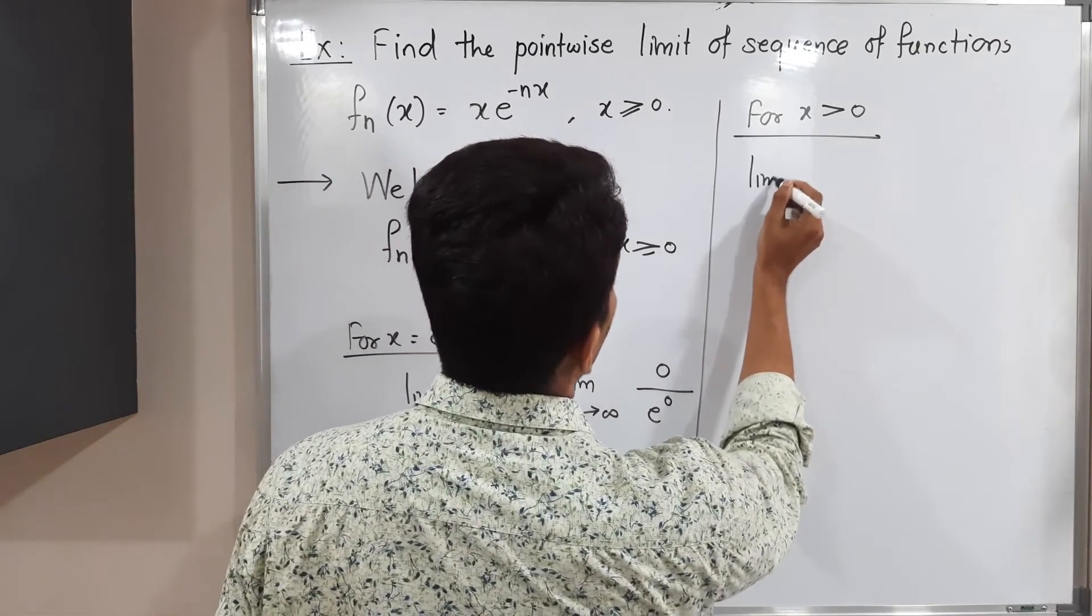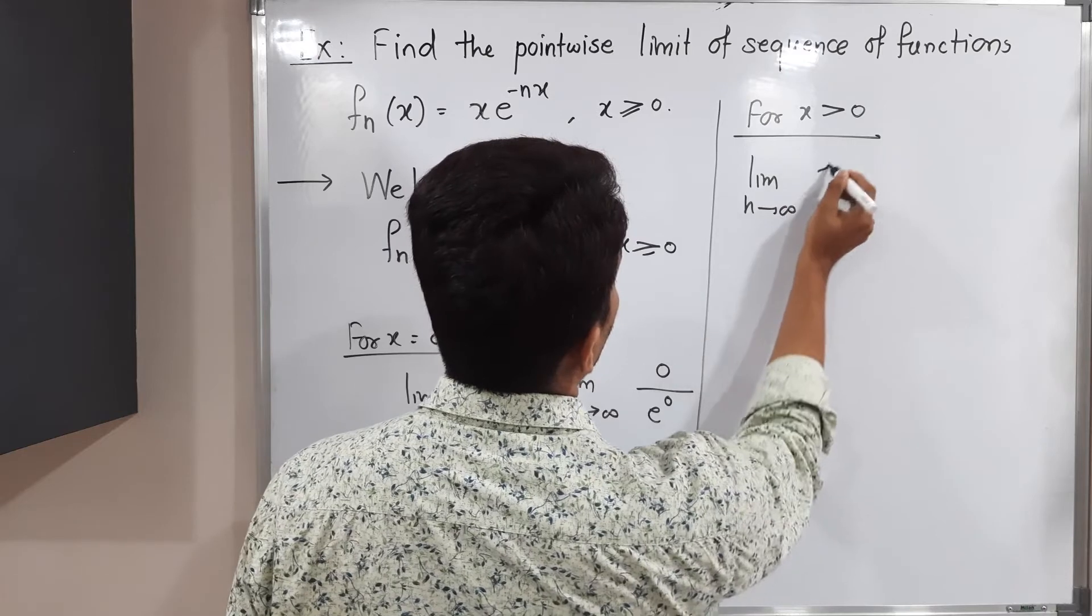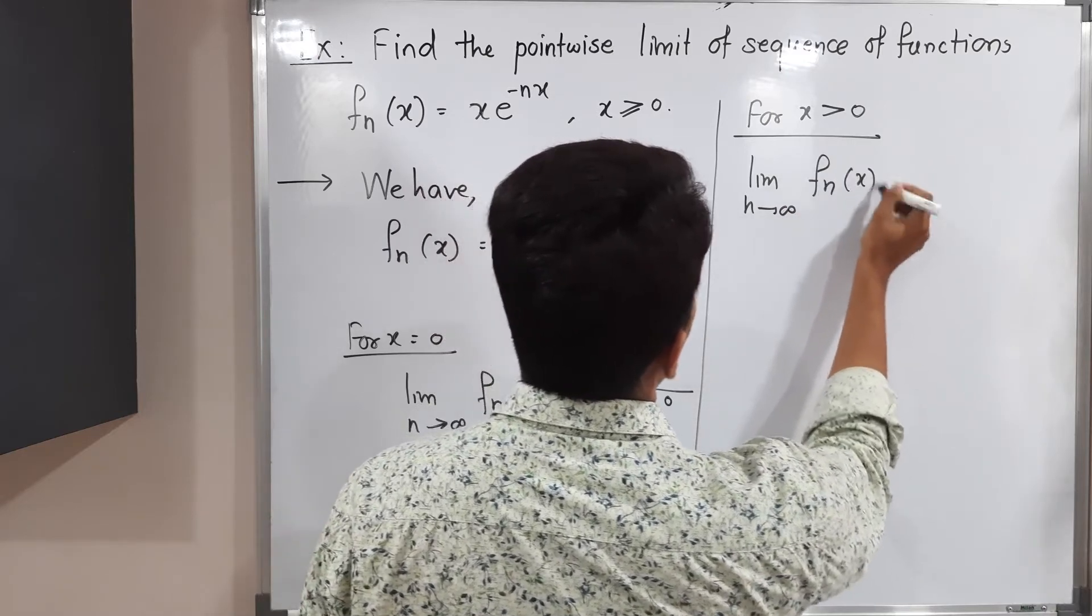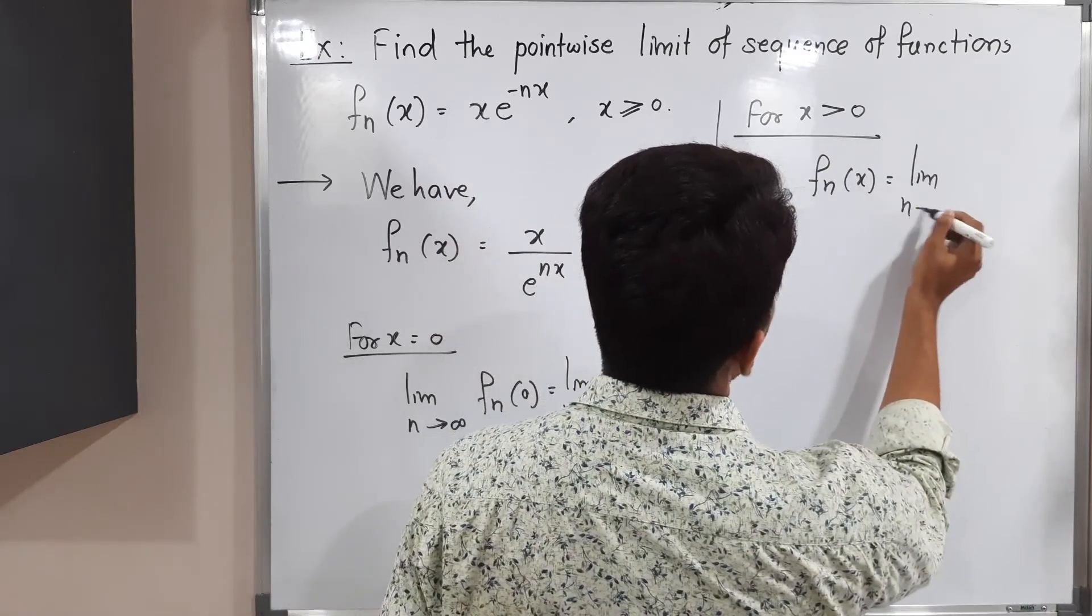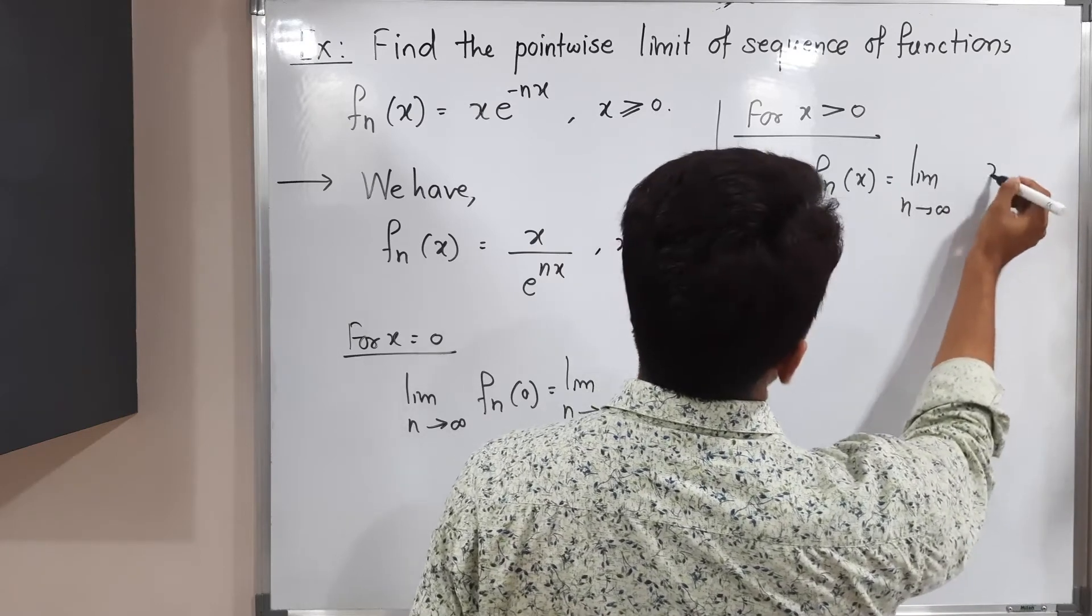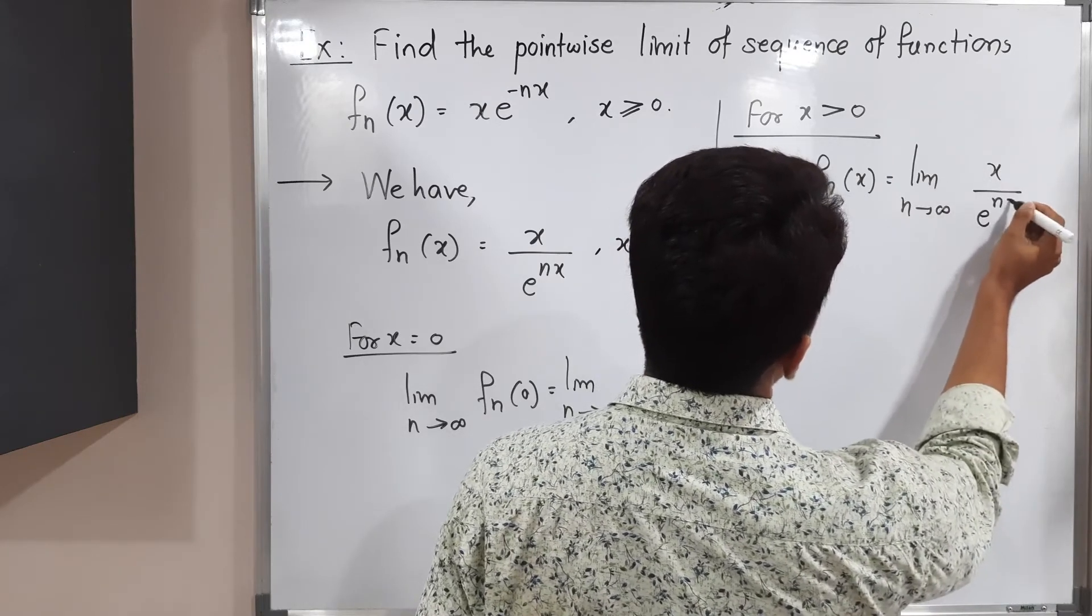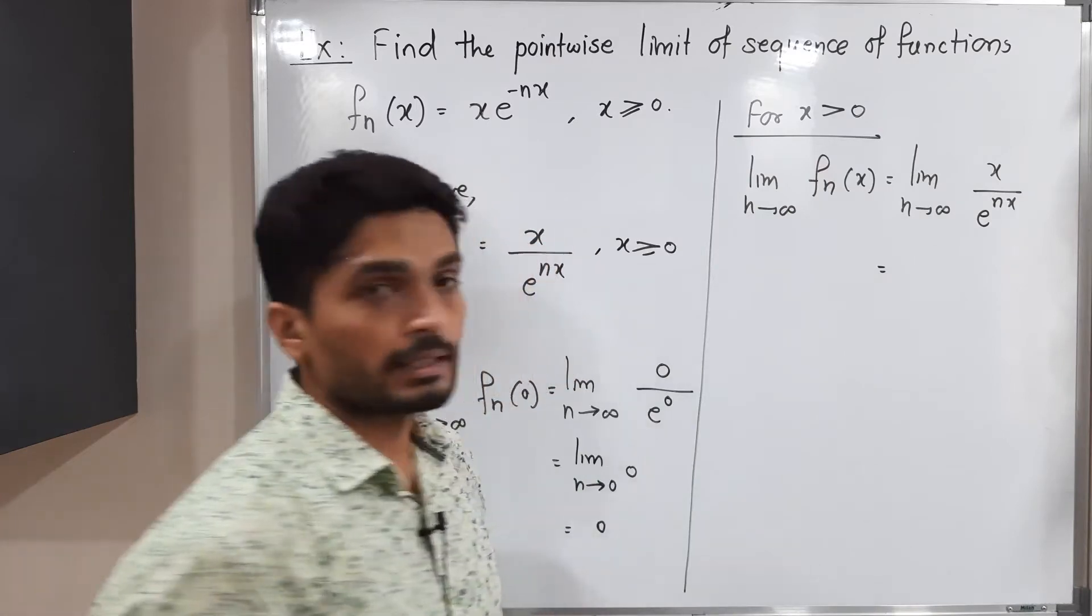So lim(n→∞) fn(x). This equals lim(n→∞) x/e^(nx). When you apply the limit, the numerator will be fixed.